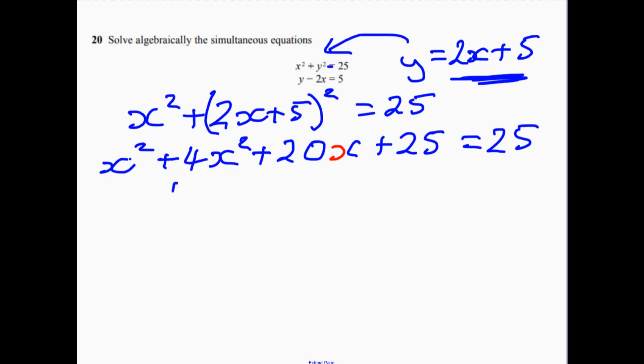Well, let's just tidy this up. We've got 5x squared plus 20x. Take away 25 from both sides, so that equals 0.